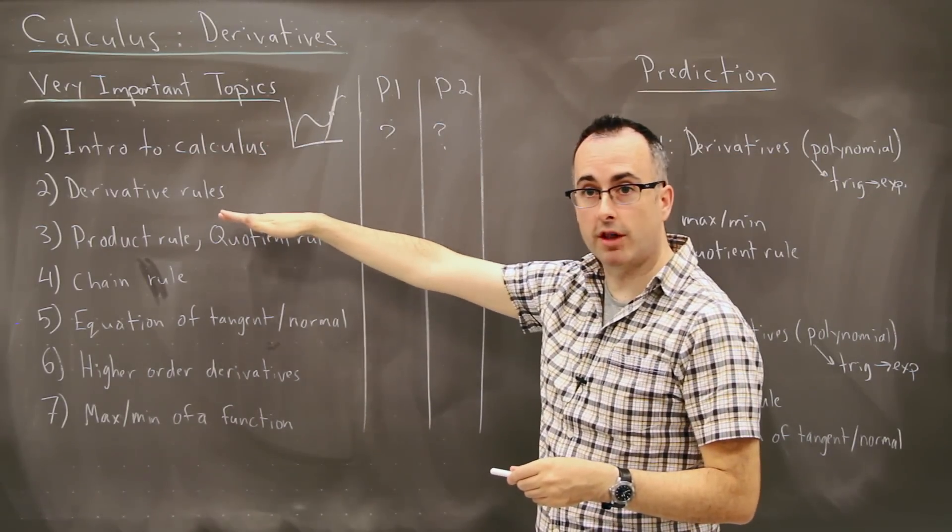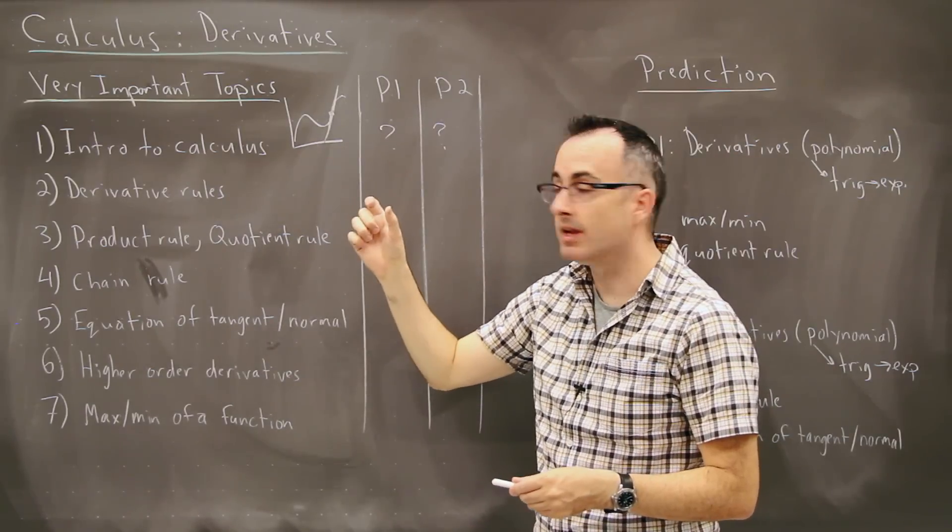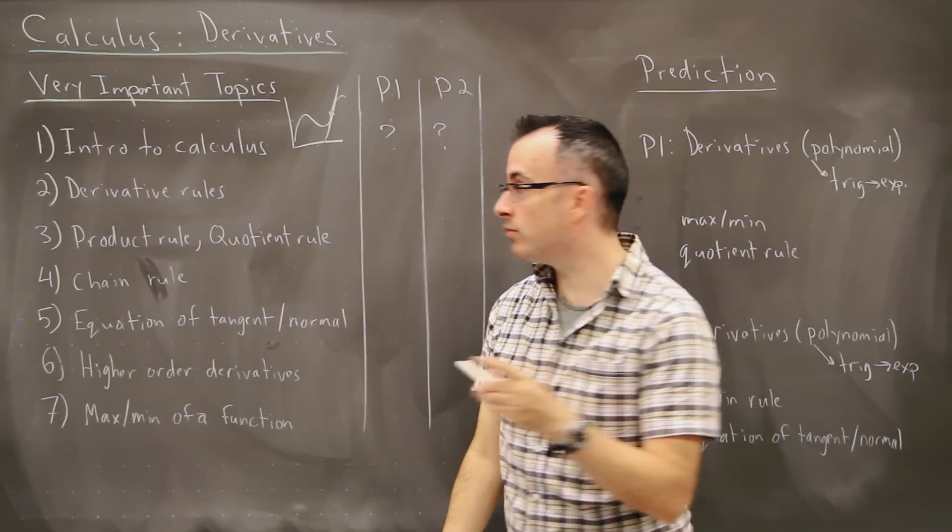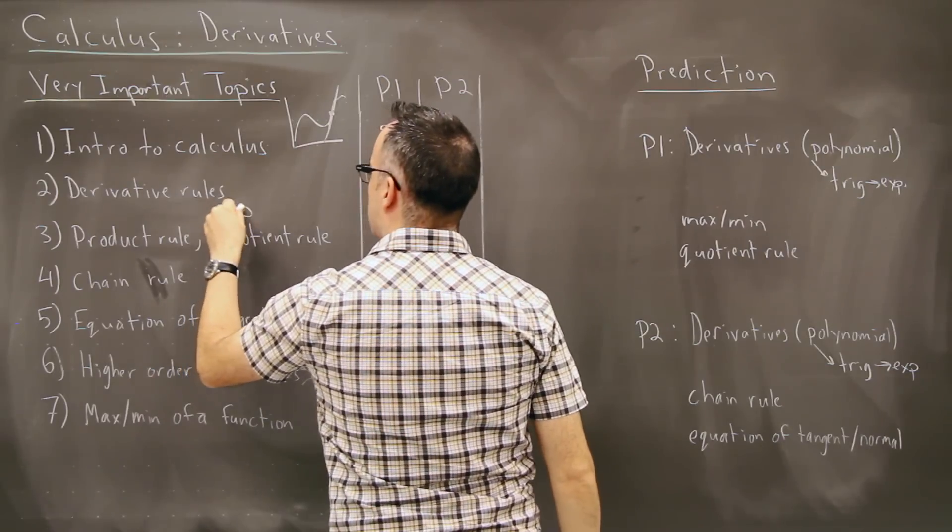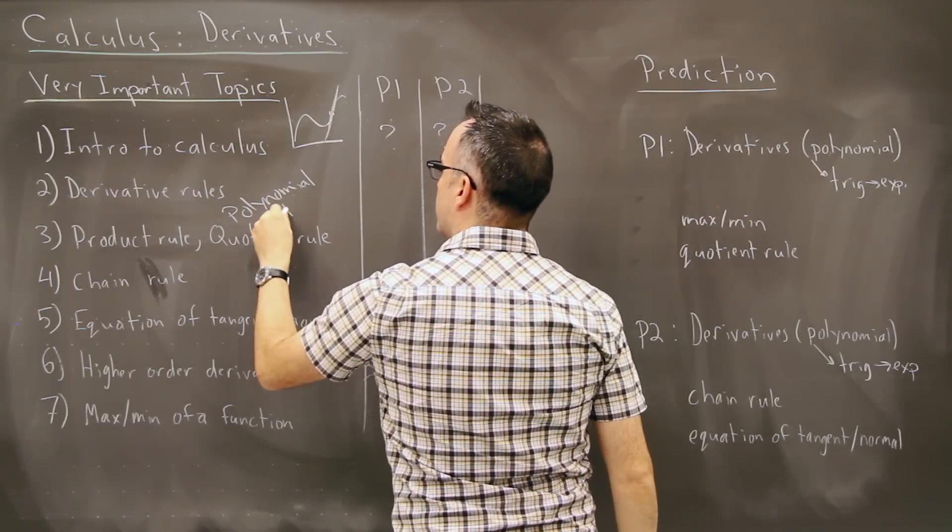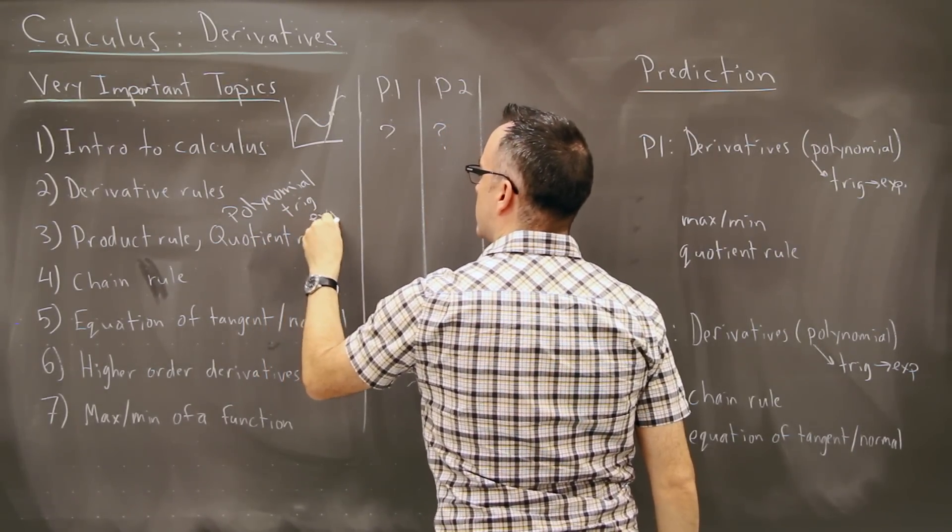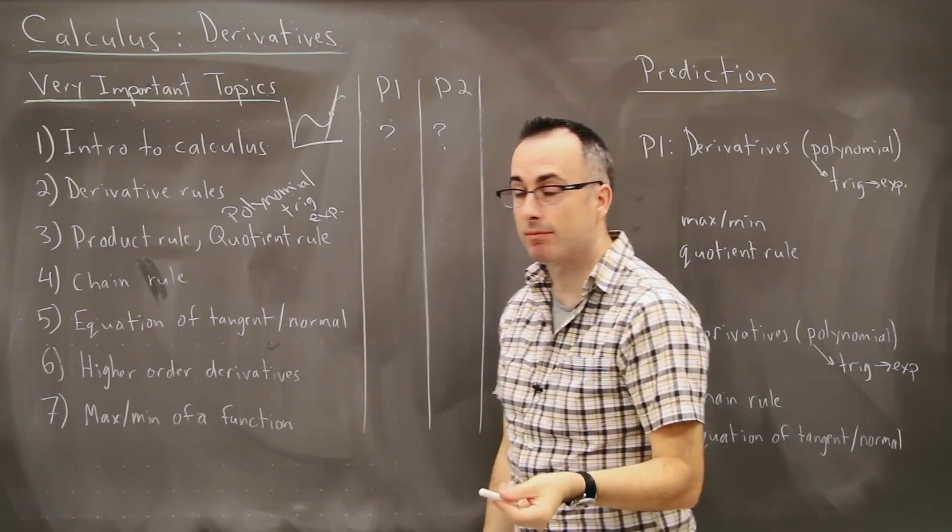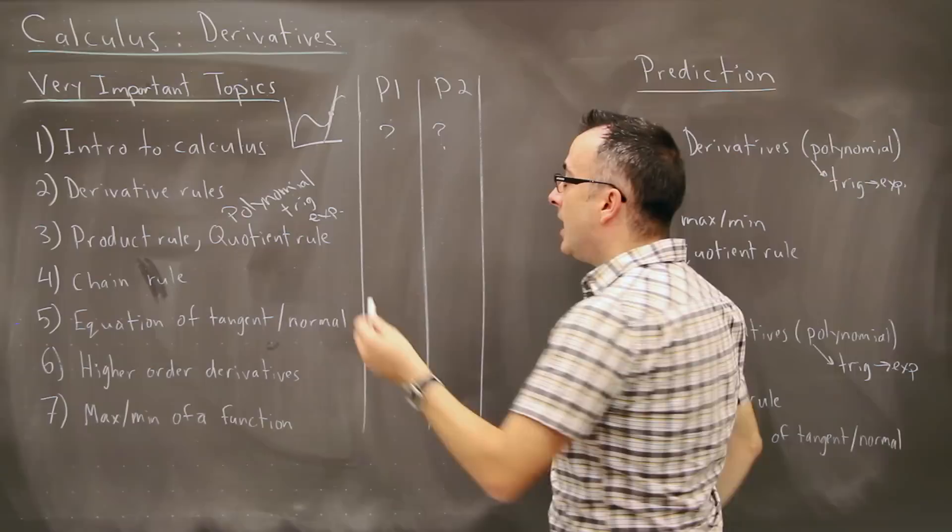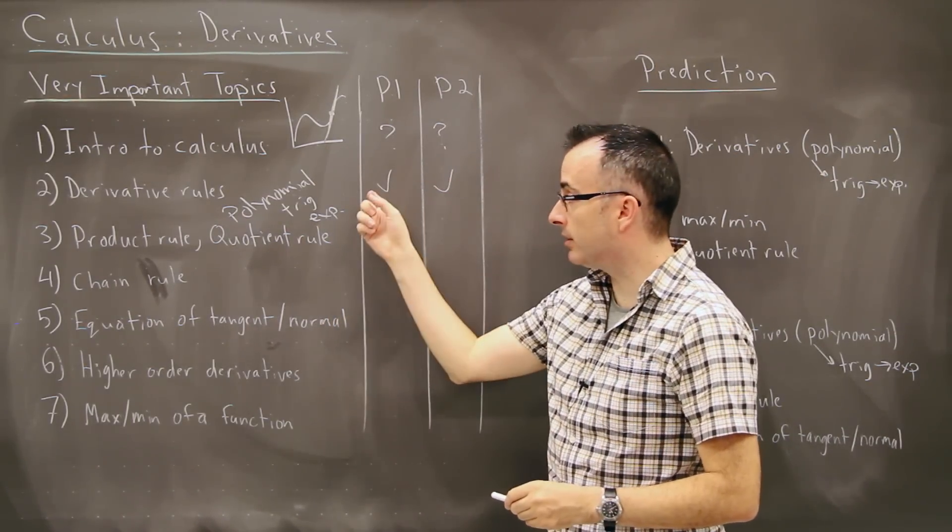Now derivative rules is super important. Here we learn different rules about how to actually do derivatives. How do we actually find this? We have this rule called the polynomial rule. That's the most common one. And after that we have things like with the trigonometry ones, like with sine and cosine. We have things with exponential functions, like e to the power of something, and so on. And we have these in our formula booklet. These show up very often in paper one and two. They're super important here.